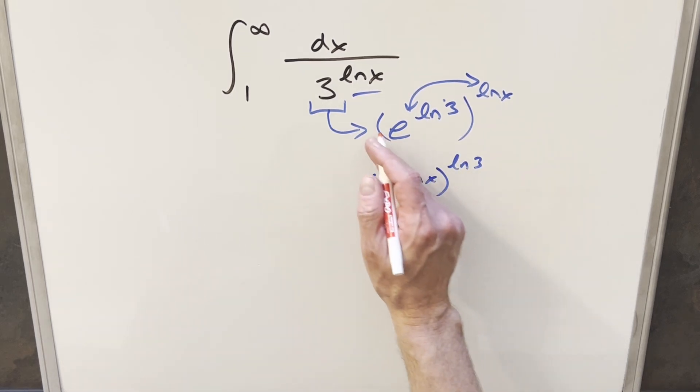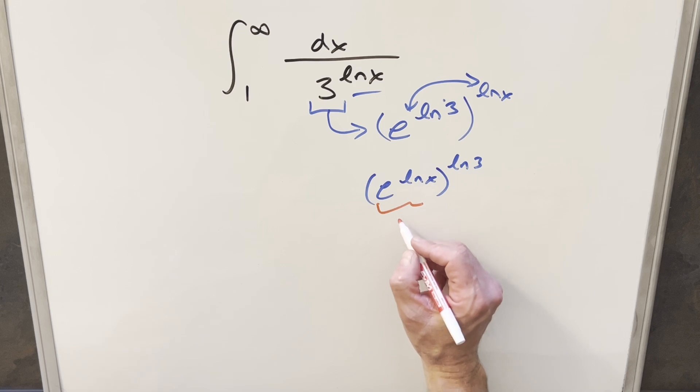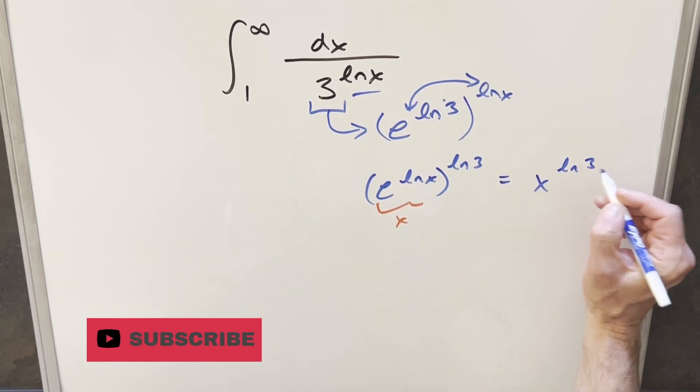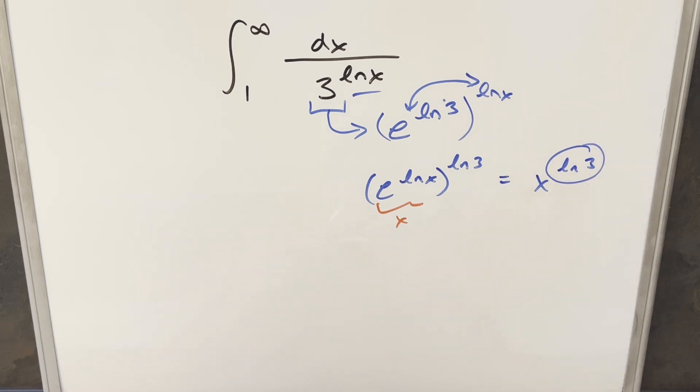But then what we have here using this same exact trick here in reverse, this here is just x. So then this thing is actually x to the ln 3, where ln 3 is just a constant value. So let's just take this and we'll put this back into our integral.